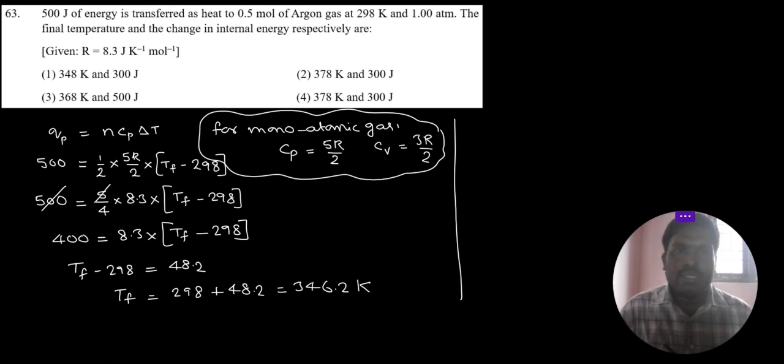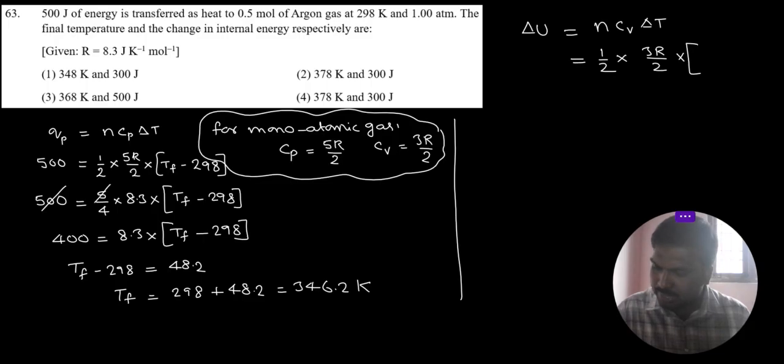Now change in internal energy delta U equal to n Cv delta T. n is 0.5 mol, Cv value 3R by 2 into delta T value. Final temperature 346.2 minus initial temperature 298 Kelvin.